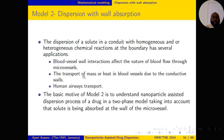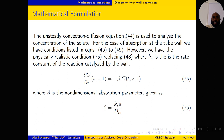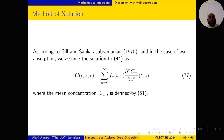We move on to Model 2, which deals with wall absorption. We pursue this model since blood vessel wall interactions affect the nature of blood flow through microvessels and the transport of mass or heat in blood vessels due to conductive wall effects and human airways transport. We want to understand nanoparticle-assisted dispersion of a drug in a two-phase model, accounting for solute being absorbed at the wall of the tissue. The steady convection-diffusion equation 44 is used to analyze concentration, adjusted with condition 75 for absorption at the wall, where beta is the absorption parameter, or mass transfer Biot number.